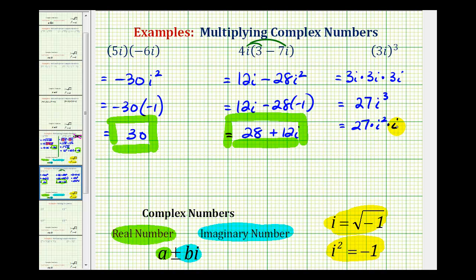This is still i to the third, but now we can substitute negative 1 for i squared. We'd have 27 times negative 1 times i, so we have negative 27i.